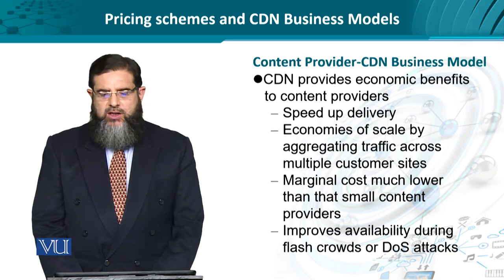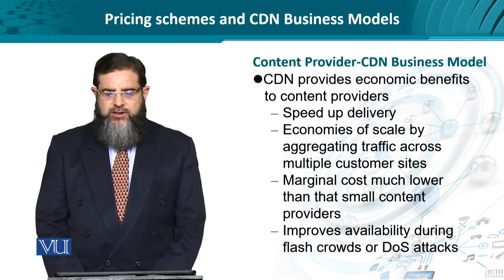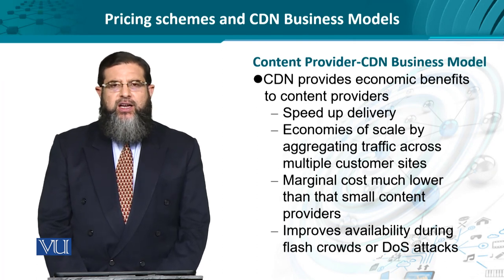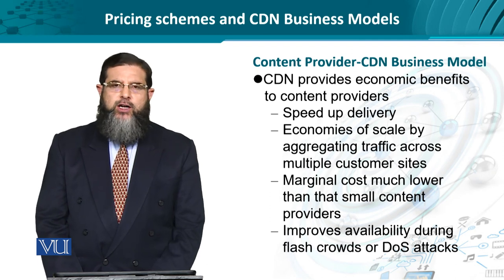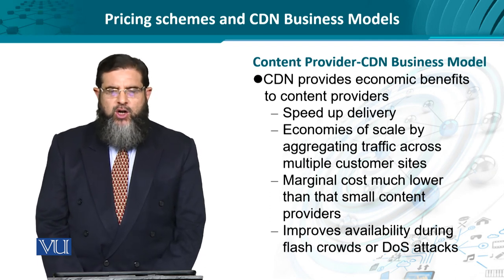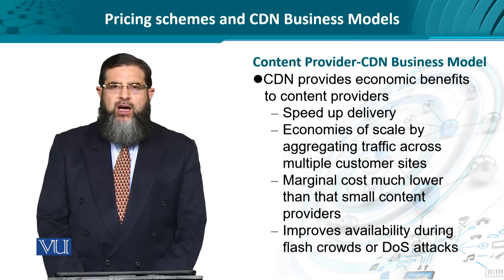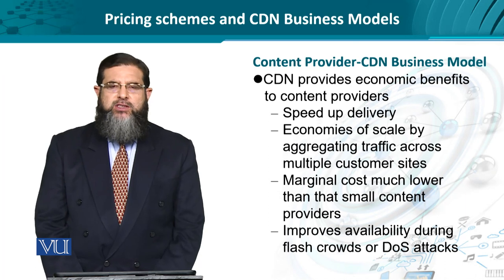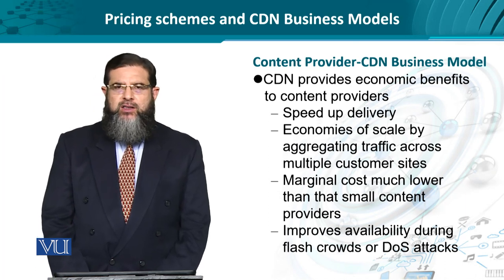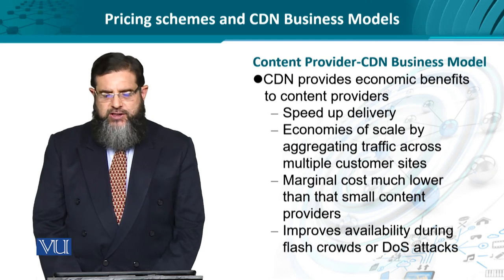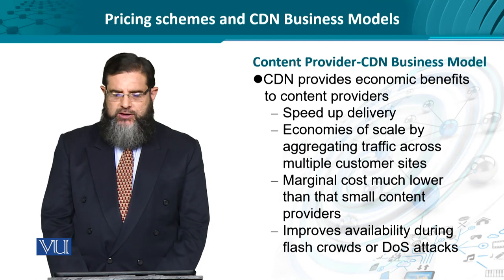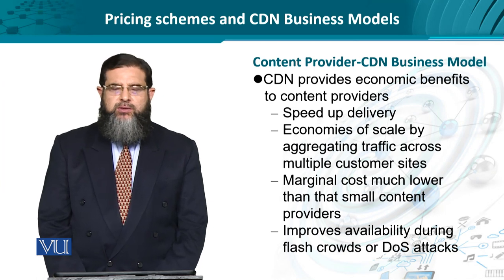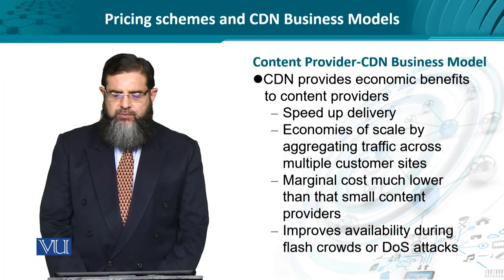The basic content provider and CDN interplay in a business model is based on an assumption — that the CDN is going to provide some economic benefits to the content provider. Because the content provider could very much host her own network, why is it banking on CDN? Number one, speeding up performance in terms of end-to-end service time, and the economies of scale by aggregating users across multiple profiles and servicing every user at a certain server, data center, or even a customer site.